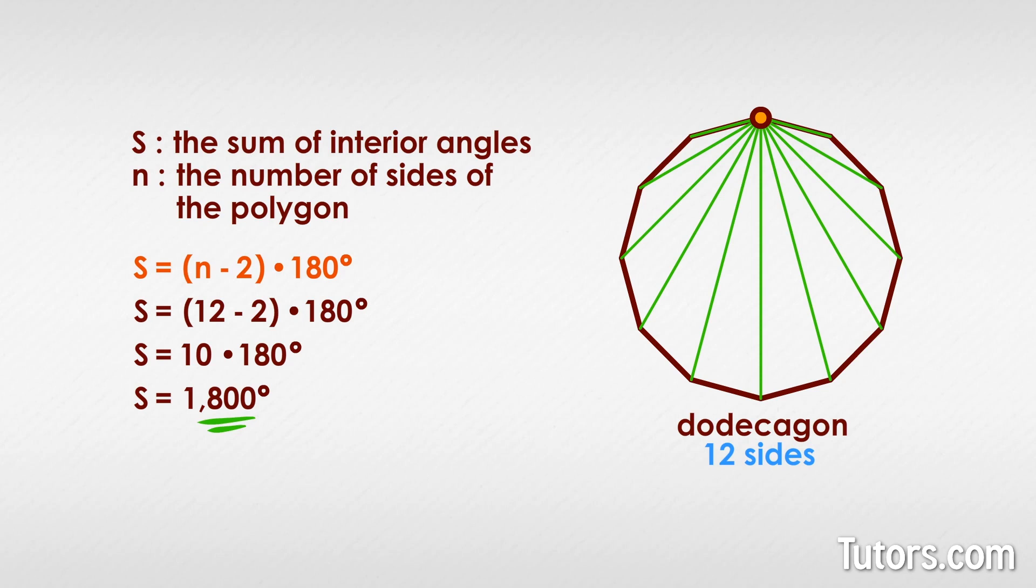Next, let's go over how to find an unknown interior angle. The same formula, S equals N minus 2 times 180 degrees, can help you find a missing interior angle of a polygon.